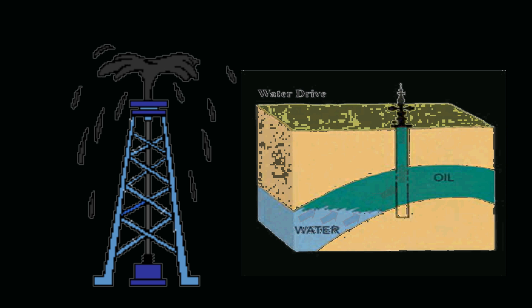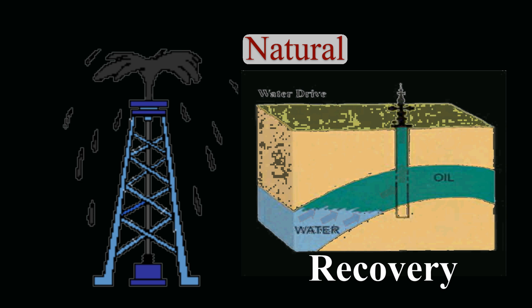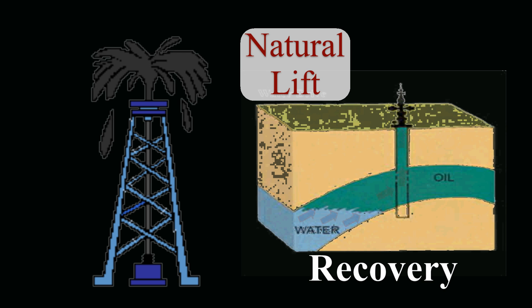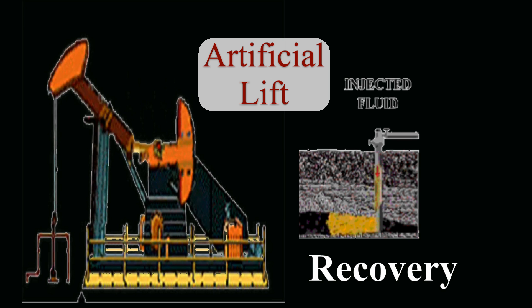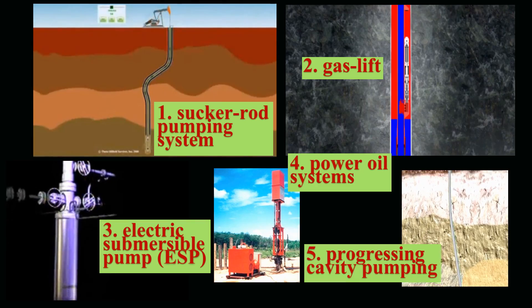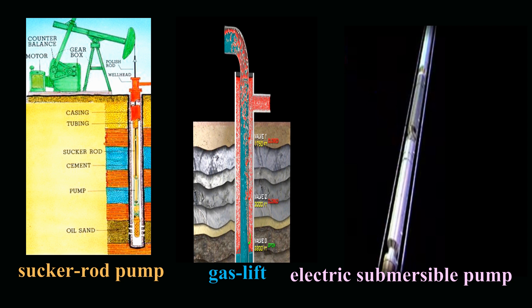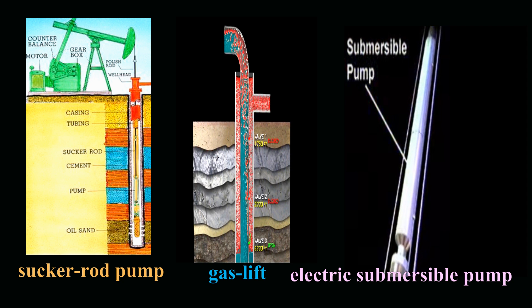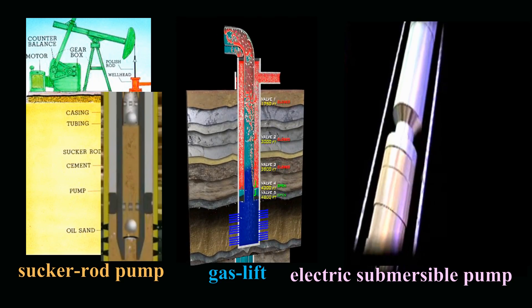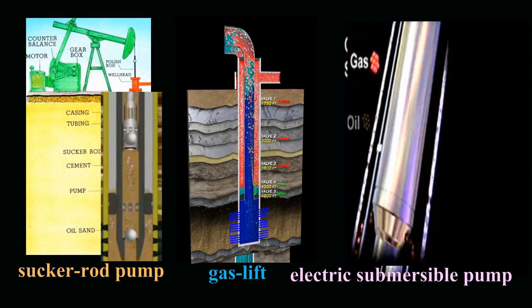Chapter 10 begins with a discussion of the two sources of energy used in the initial and subsequent stages of recovery. The first source most commonly used is natural, called natural lift. The second source is man-made and is called artificial lift. This chapter outlines three different types of artificial lift and mentions two others used less frequently, concluding with labeled diagrams of three of the most popular systems with detailed explanations of how each functions and why it is selected.